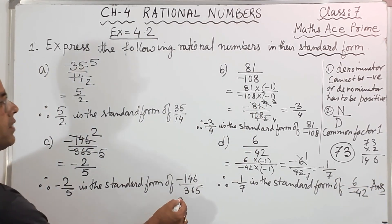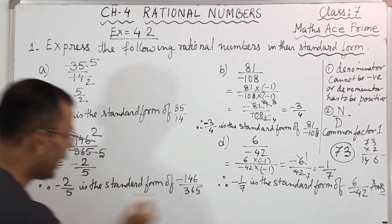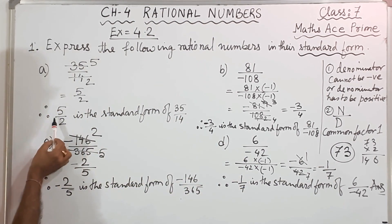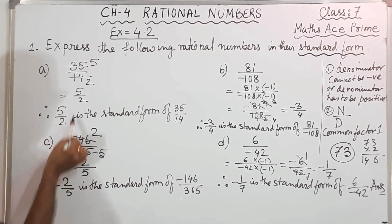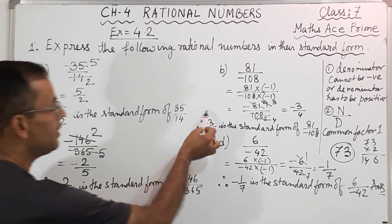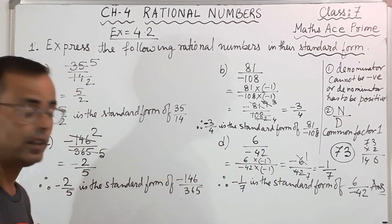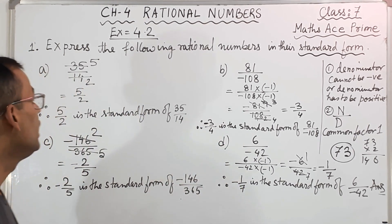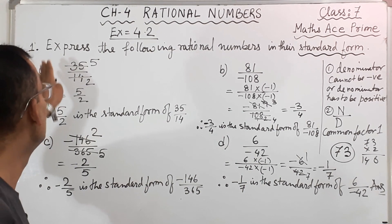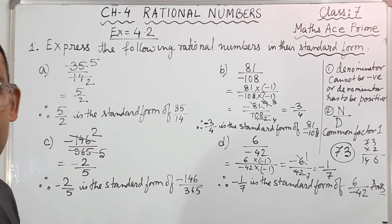This is the answer. So the answers are: for A, the answer is 5 by 2; here answer is minus 2 by 5; here answer is minus 3 by 4; here answer is minus 1 by 7. So I hope you have understood question number 1 parts A, B, C, D.